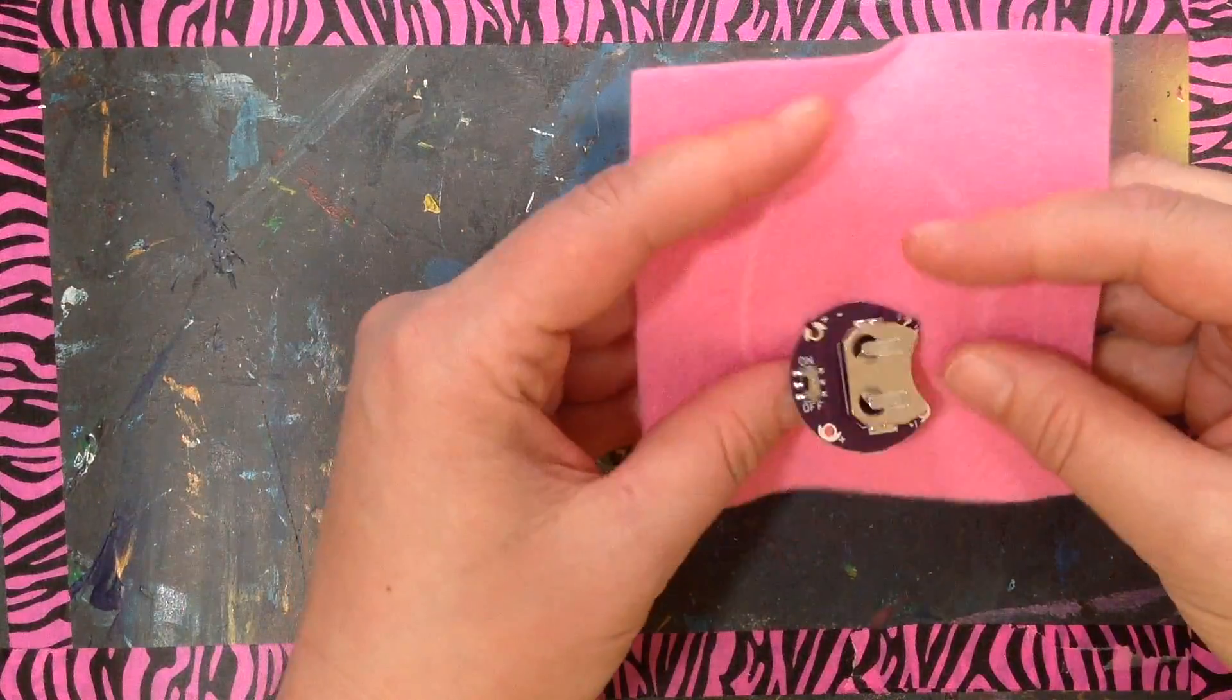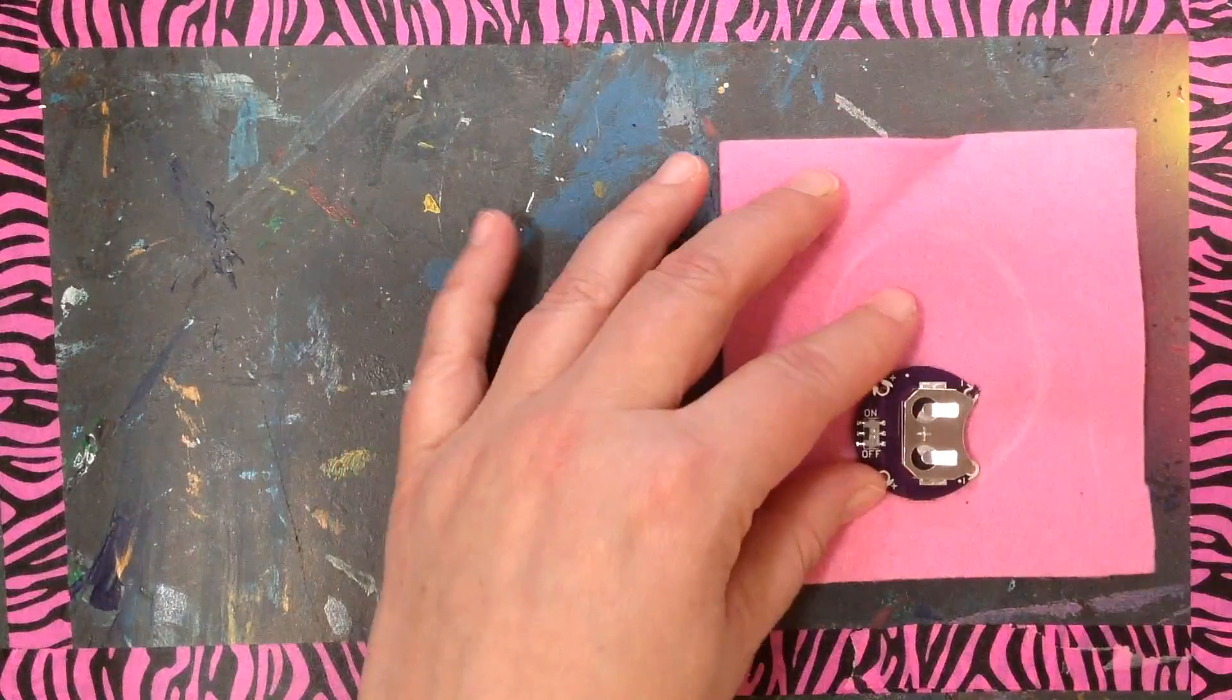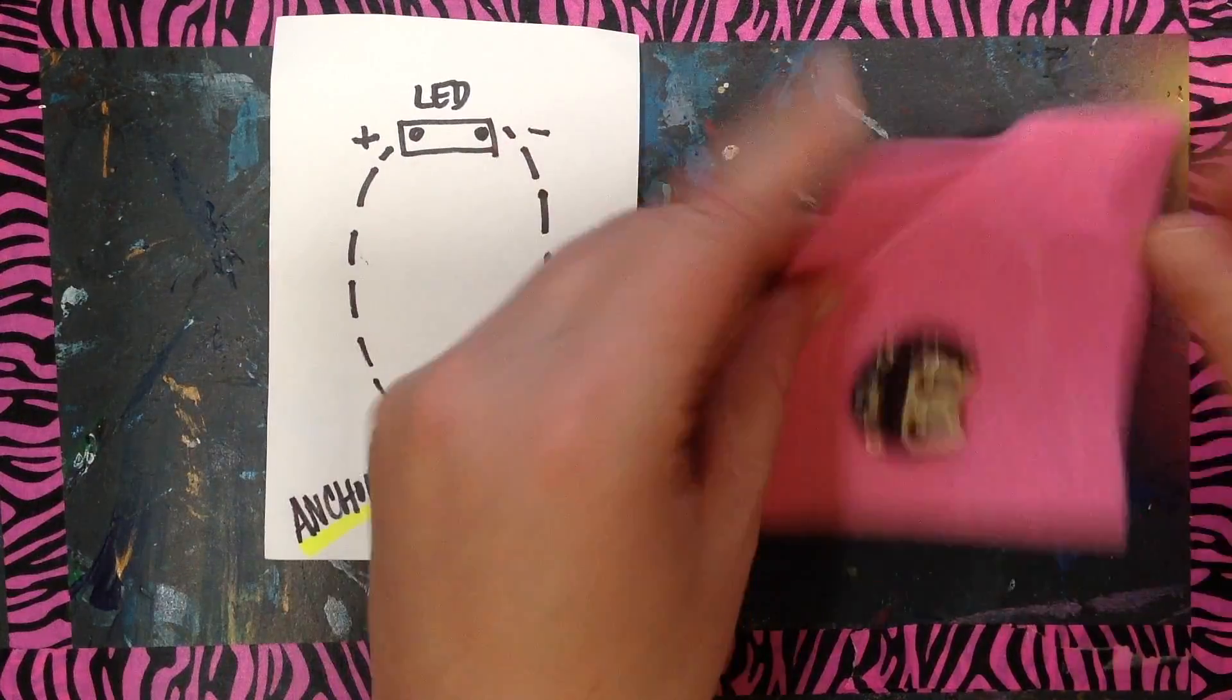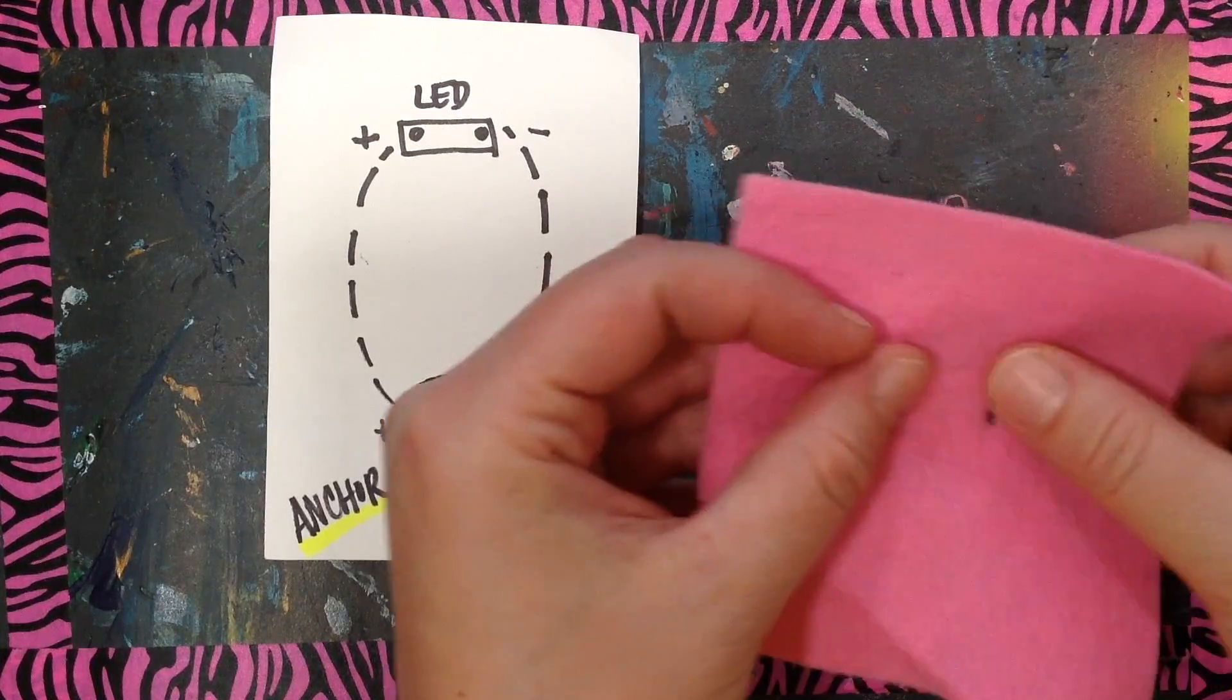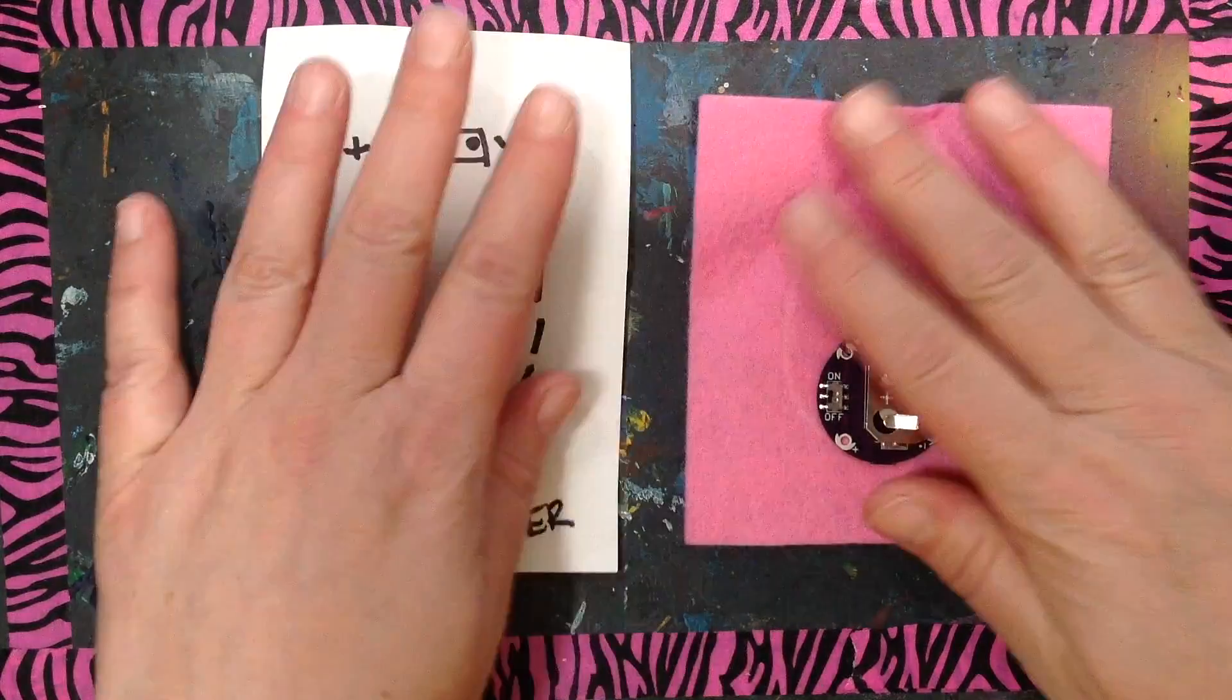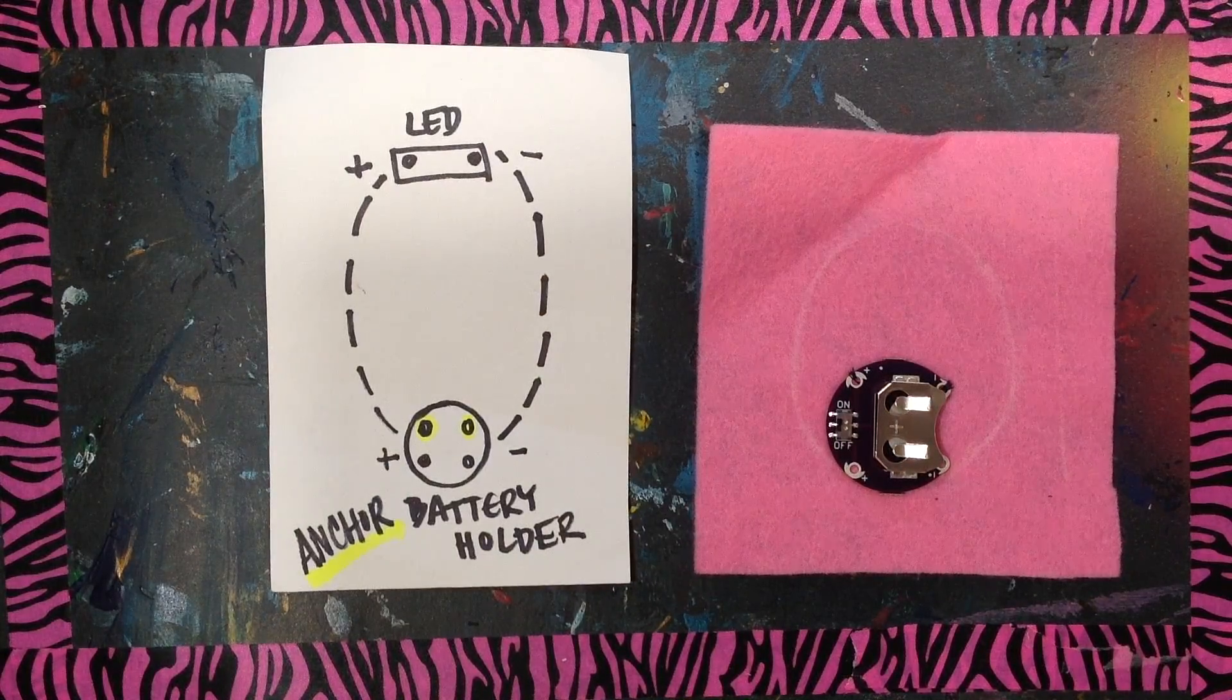So you can see at the top here, these two holes are anchored and the bottom comes up. If we look at the back, you can see they're knotted. It's not going to come out. So the next step would be then to begin sewing one of the circuits.